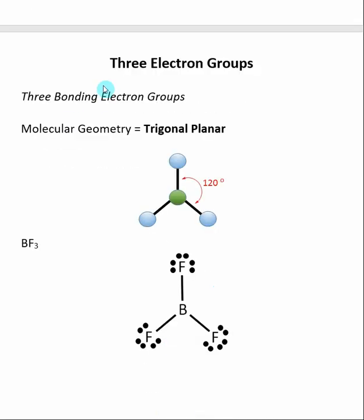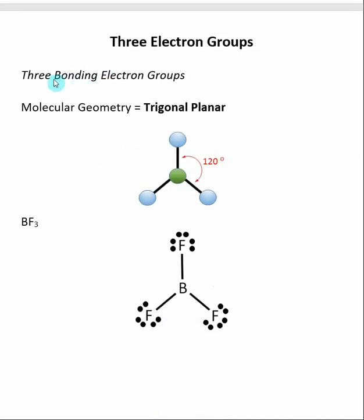When the central atom has three groups of electrons and all three are bonding electrons, the molecular geometry is called trigonal planar. It's called trigonal because it's shaped like a triangle, and it's called planar because all three bonds are in the same plane — so this molecule is basically flat. A good example is BF3, where the bond angle between fluorine, boron, and fluorine is 120 degrees.